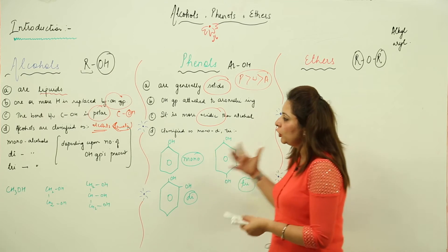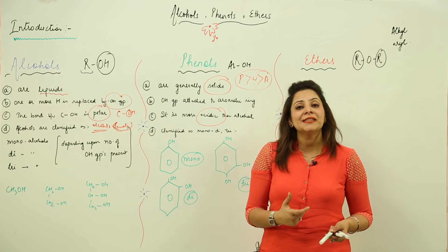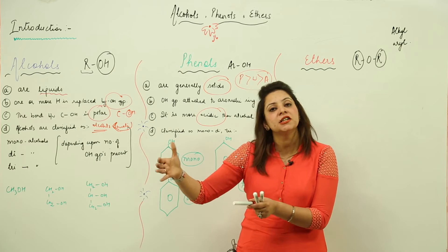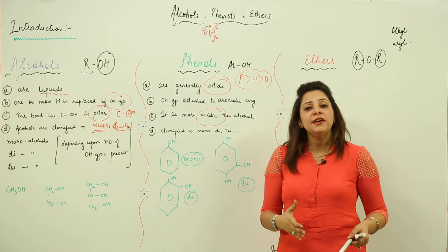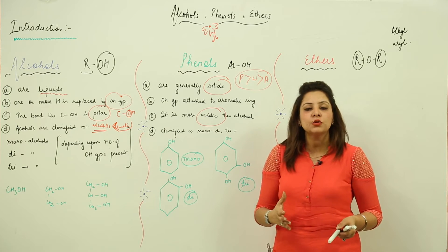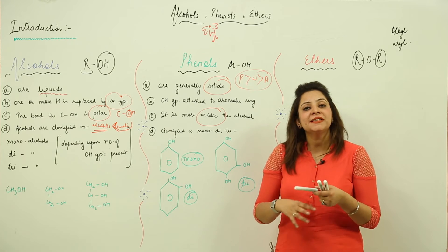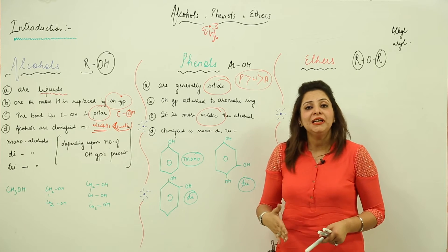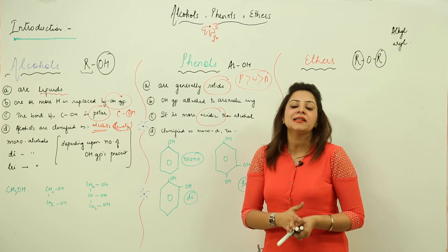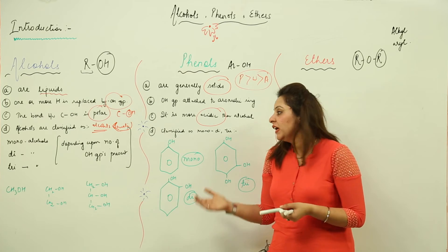We can also replace more than one H atom. If we replace more than one H atom from an aliphatic compound, we get mono, di, or trihydric types of alcohols. Likewise, if we replace one hydrogen from an aromatic compound, we get a monohydric alcohol. If we replace two hydrogens, we get two OH groups — a dihydric type. Depending upon the number of OH groups present, we classify alcohols and phenols into monohydric, dihydric, and trihydric.